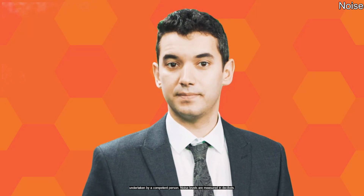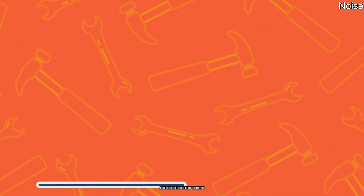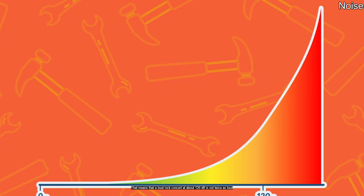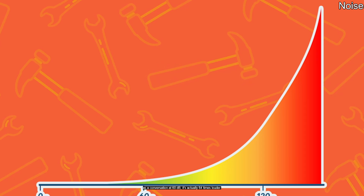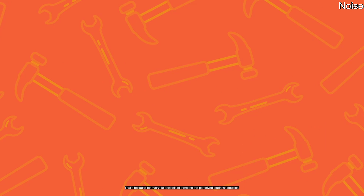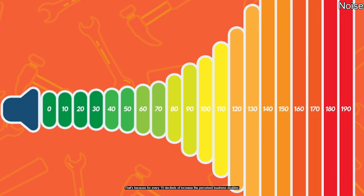Management can control noise by conducting an initial noise assessment — a detailed measurement and monitoring of levels of sound in a particular area, undertaken by a competent person. Noise levels are measured in decibels. A record of the assessment should be recorded and kept. The decibel scale is logarithmic, meaning a loud rock concert at about 120 decibels is not twice as loud as a conversation at 60 decibels — it's actually 64 times louder, because for every 10 decibels of increase, the perceived loudness doubles.